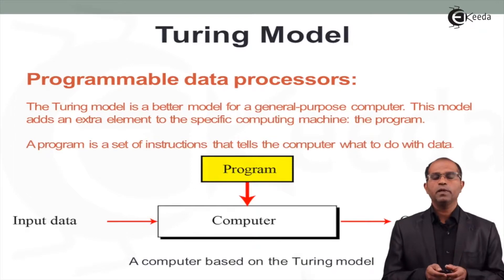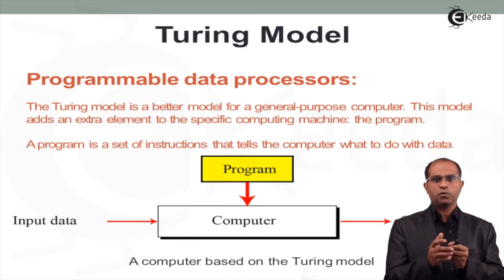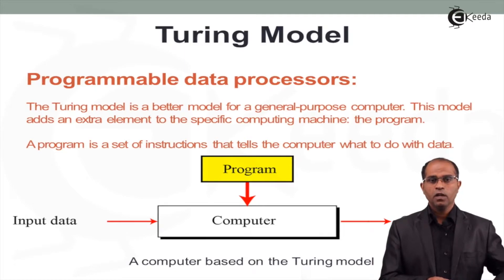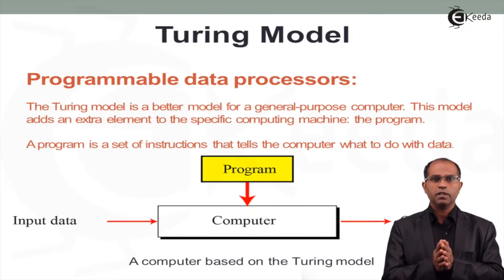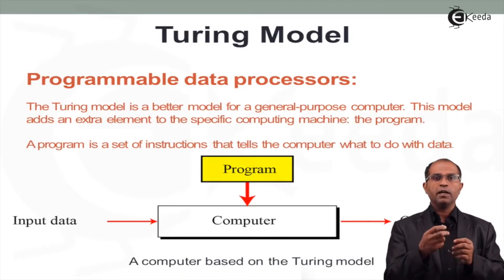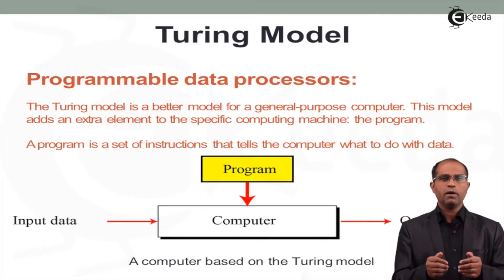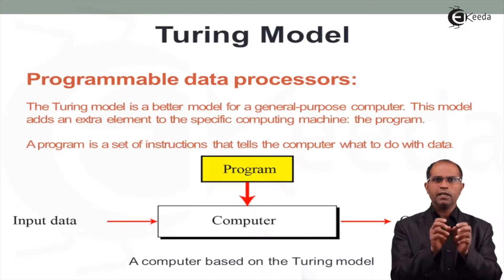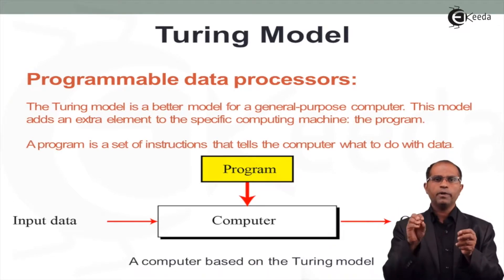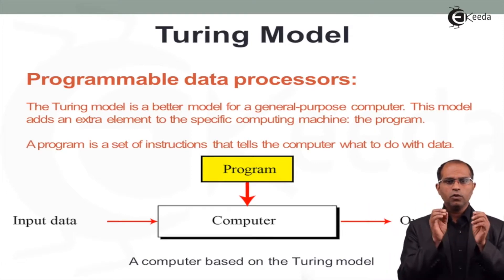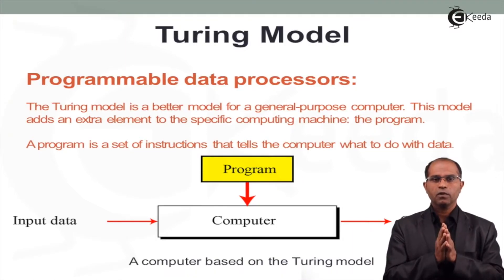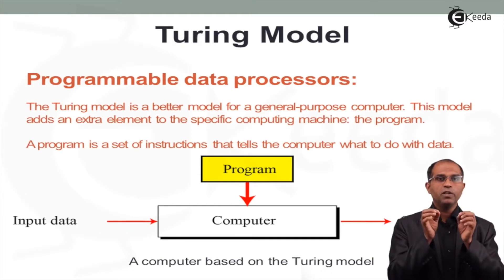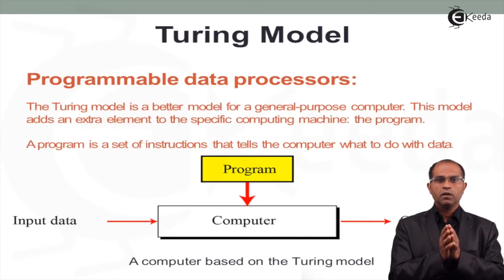When we say we have to process data, we need some additional components. The Turing model was extended with the concept of a programmable data processor. The difference is: a simple data processor can only do one operation on a given data, whereas a programmable data processor can carry out multiple operations on the same data.